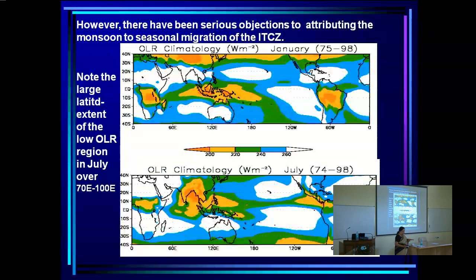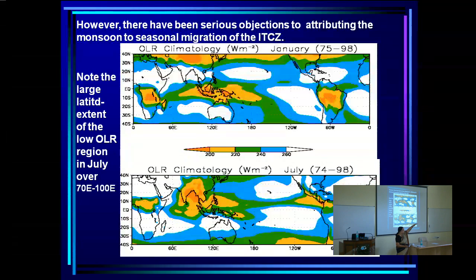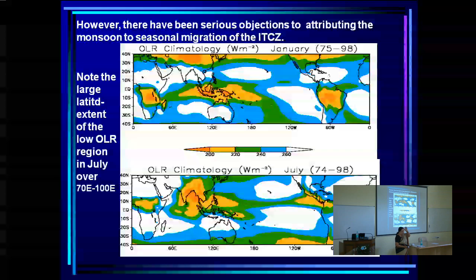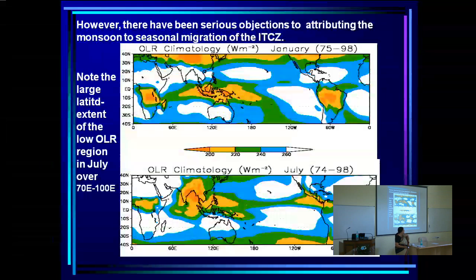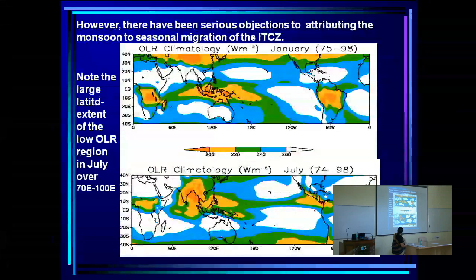For those who are not meteorologists: OLR is outgoing longwave radiation measured by satellites. Low OLR means that the radiating surface is very high in the atmosphere — that is, we are seeing the top of a high cloud. Low OLR regions involve deep, high clouds, and they are associated with a lot of rain.